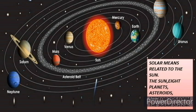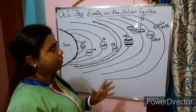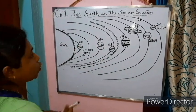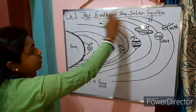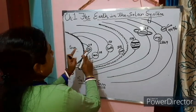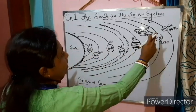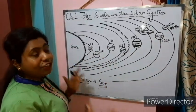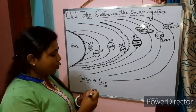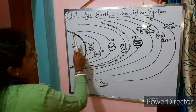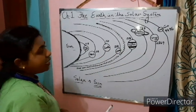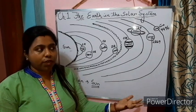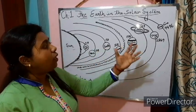Now let us go ahead with the definition of the solar system. The word 'solar' is related to the sun. The solar system is the system formed by the sun along with eight planets, asteroids, and meteoroids. In the solar system, there is the sun, eight planets located at distances from the sun, asteroids, and meteoroids. We will go with the definition of asteroids and meteoroids in the next videos.